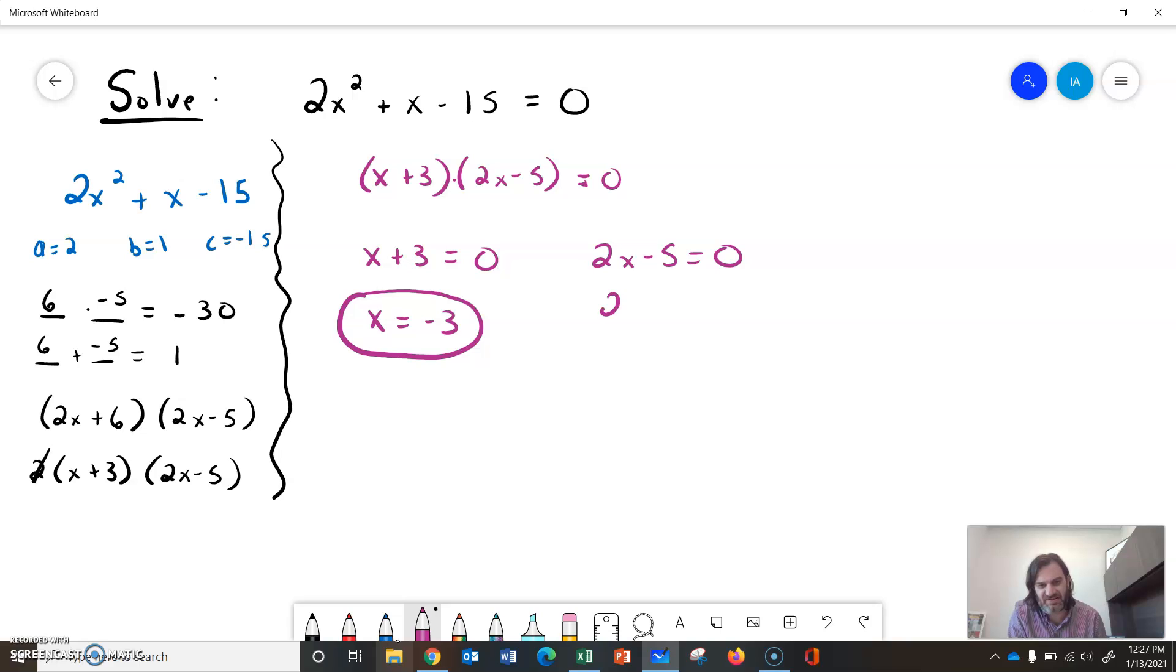2x minus 5 equals 0, we'll pull the 5 over, so we'll have 2x equals 5, and divide by the 2, so we'll get x equals 5 halves.